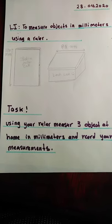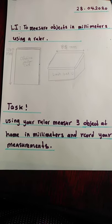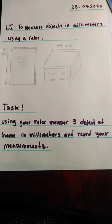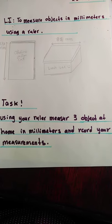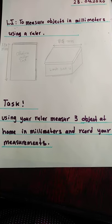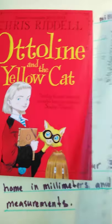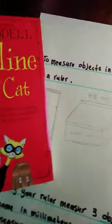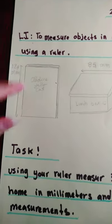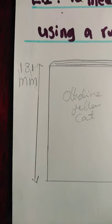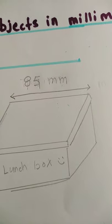Now I will give you a task. Please pause the video. Your task is using your ruler, measure three objects at home in millimeters and record your measurements. You will choose three objects and measure them using the ruler. You can always check your measurement again to make sure you have the correct measurement. Then you can draw your object and write your measurements, record it using millimeters.